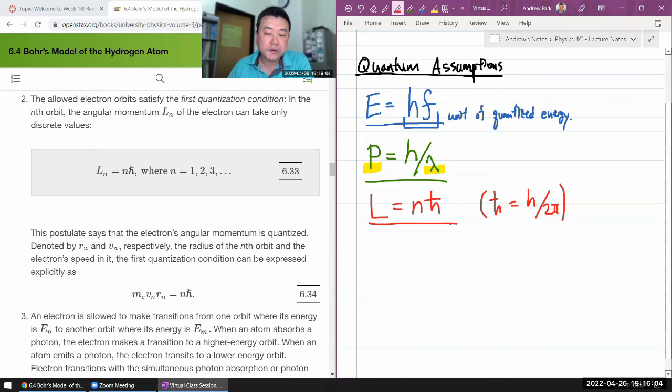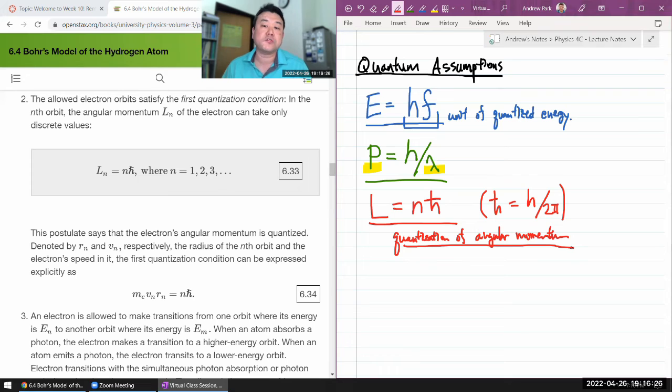The idea of quantization of angular momentum is going to hold for orbital angular momentum, which is what Bohr was considering in his model of hydrogen atom. And it's going to hold for other kinds of angular momentum,